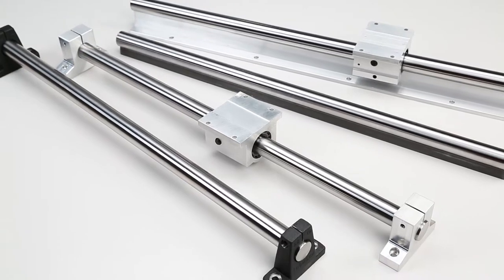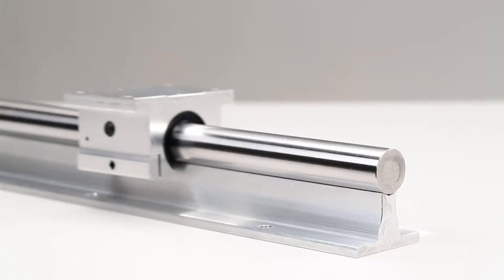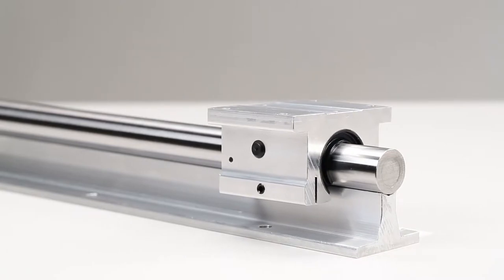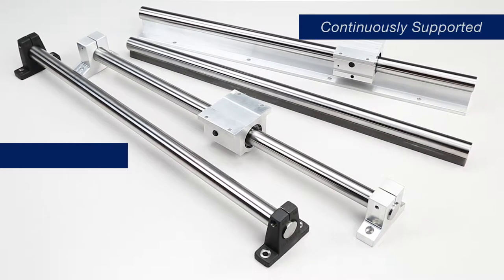Round shafting is a key component in many linear motion machines and devices. In order for it to be used as a linear guide, it needs to be properly mounted. The two most common shaft mounting methods are continuously supported and end supported.